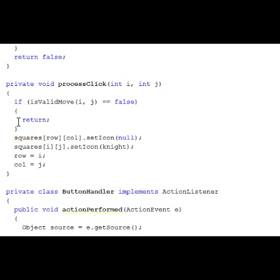If it is valid, then for the current position where the knight is, we set the icon there to be null, removing the icon from that cell.